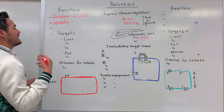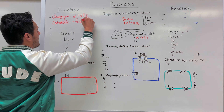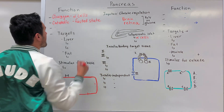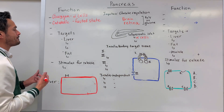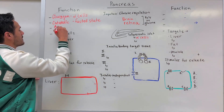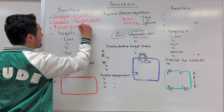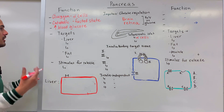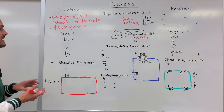Glucagon is a catabolic hormone and it's going to be released whenever we're in the fasted state, meaning we haven't had a meal in a while. Glucagon helps to increase our blood glucose levels, or blood sugar. Its targets are the liver — liver cells — and fat cells.